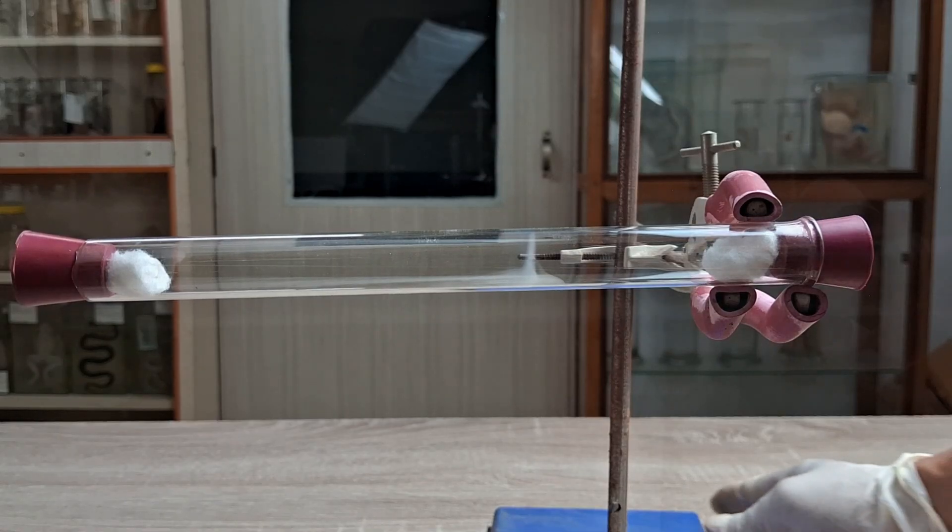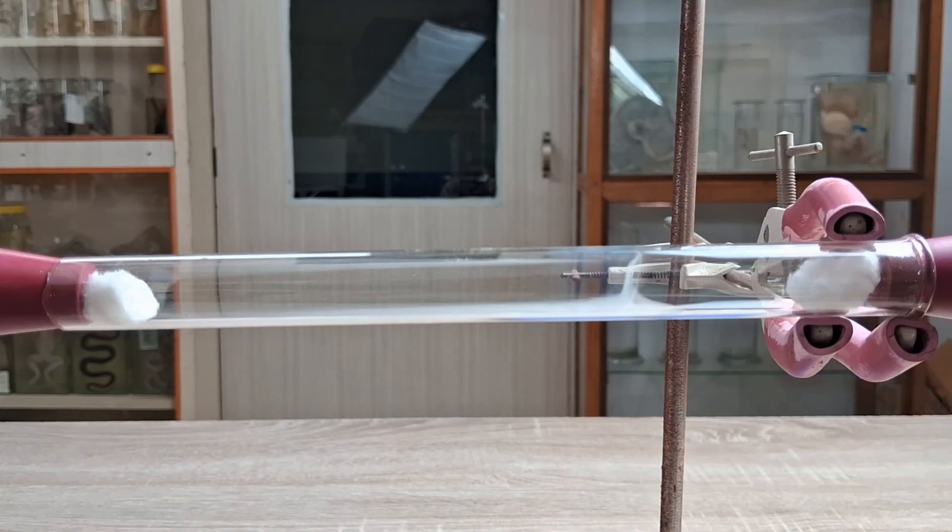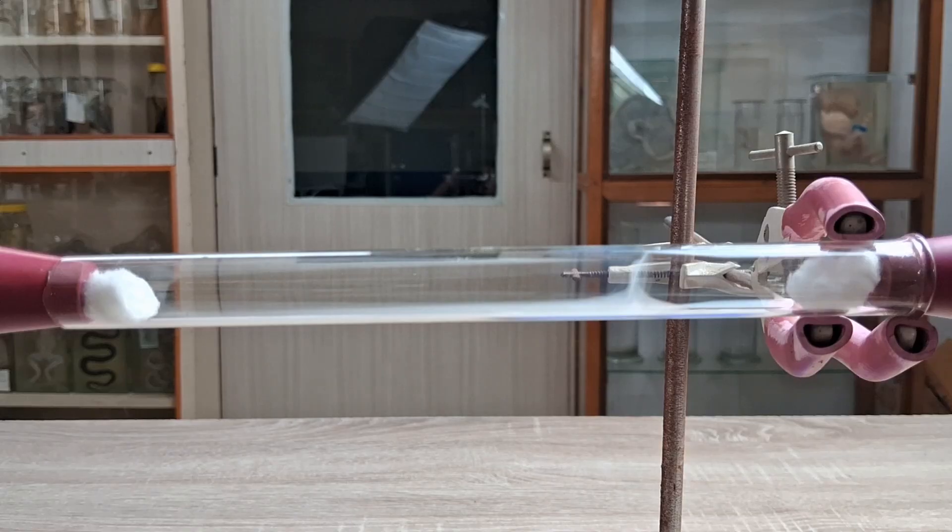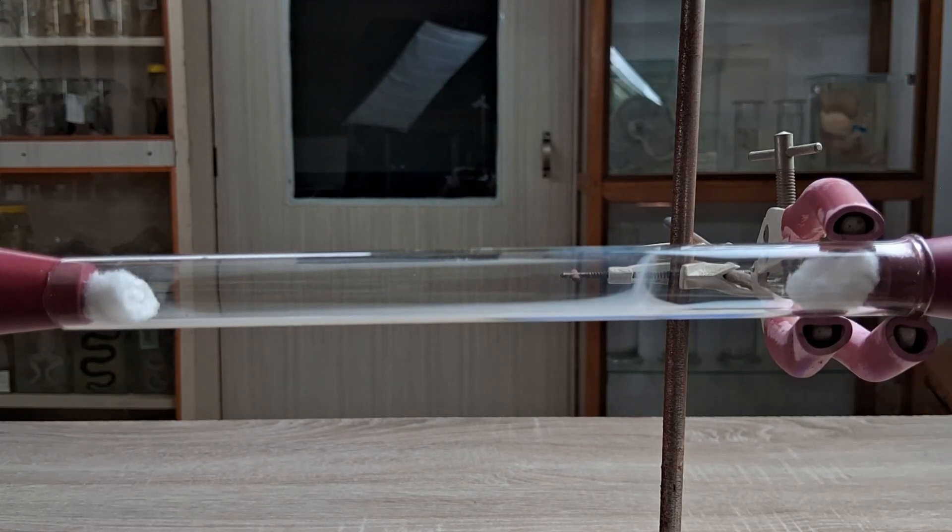The white fumes are more concentrated towards the hydrochloric acid side because the fumes of ammonia are lighter than those of hydrochloric acid and therefore travel comparatively faster, moving quicker towards the hydrochloric acid.